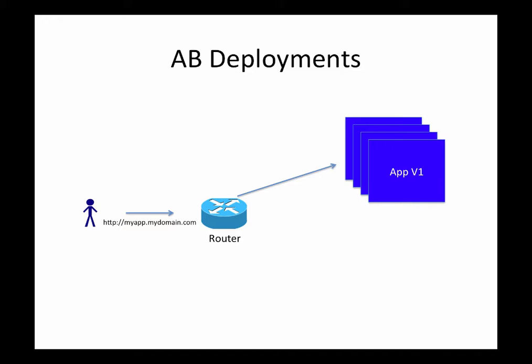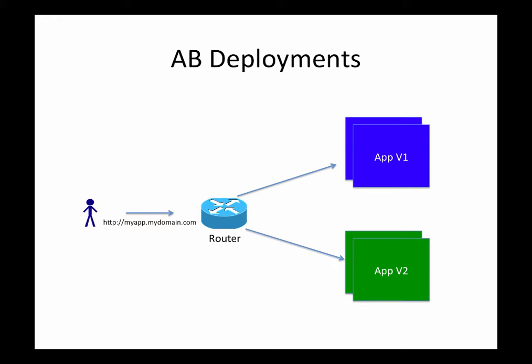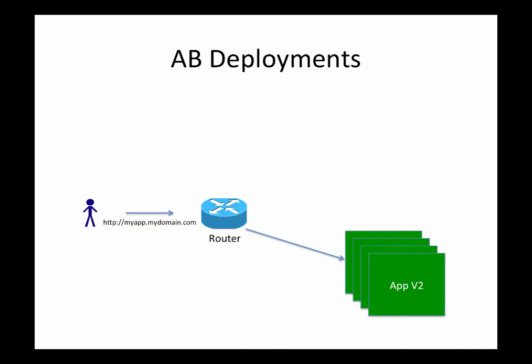Now let's say you need to make changes to this application. You introduce a changed version, and in A/B deployments instead of turning off the older version and switching over to the newer version, you run both versions at the same time. You had four instances of version one running; you introduce just one instance of version two. You configure your router to direct some traffic to version two, and if you're happy with it, you gradually increase version two instances and reduce version one instances.